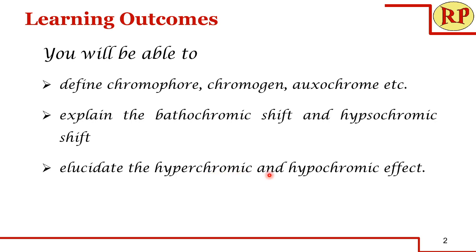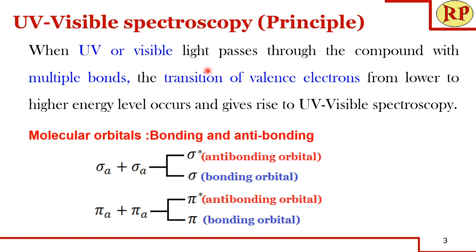First let us understand the principle behind UV-visible spectroscopy. When UV or visible light passes through a compound with multiple bonds, the transition of valence electrons from a lower to a higher energy level occurs, giving rise to UV-visible spectroscopy. When two atomic orbitals combine, they form two molecular orbitals: one with lower energy called the bonding orbital, and the other with higher energy called the anti-bonding orbital — shown for both sigma and pi bonds.